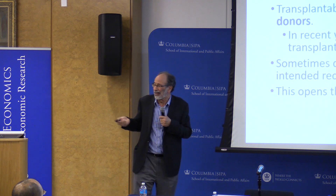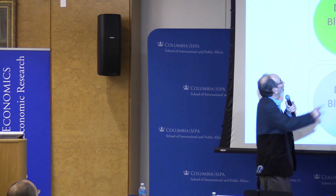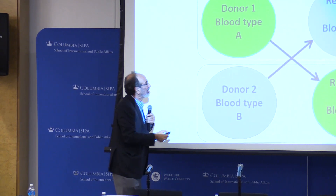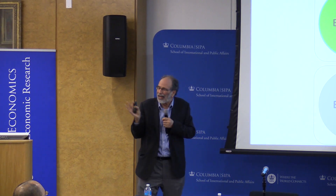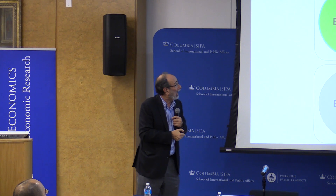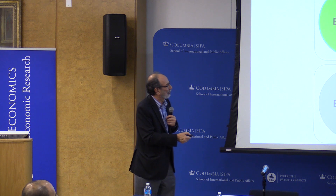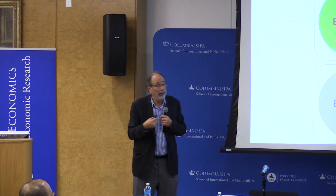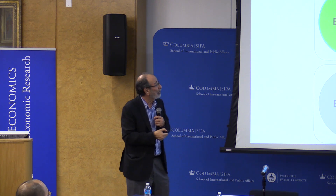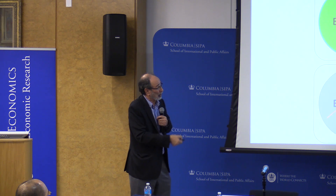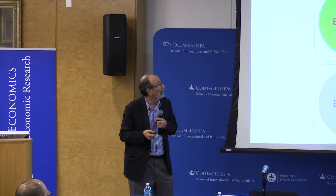This is where exchange comes in. In a simple two-pair exchange: Donor 1 loves Recipient 1 but has an incompatible blood type. Donor 2 loves Recipient 2 but also has incompatible blood type. Before kidney exchange, we would send these donors home and their intended recipients would continue on the long, dangerous deceased donor waiting list. But if we arrange an exchange between these two pairs, we can get two transplants that we wouldn't otherwise have gotten.